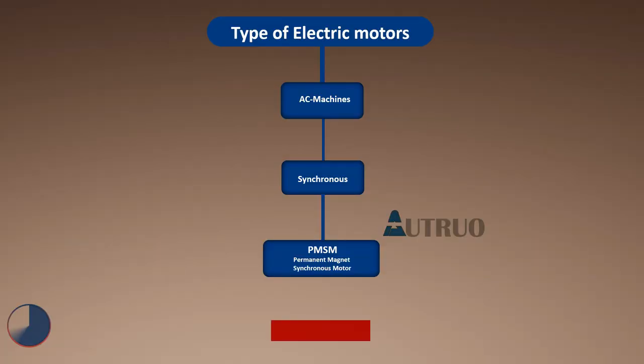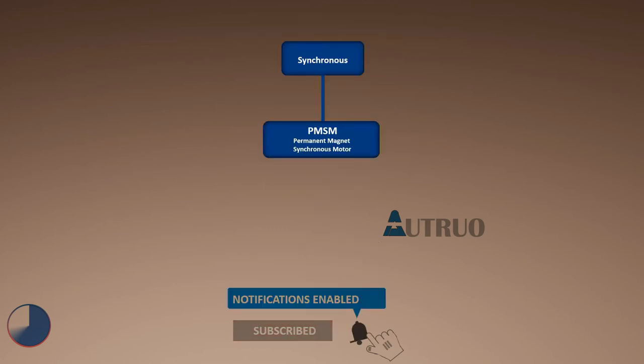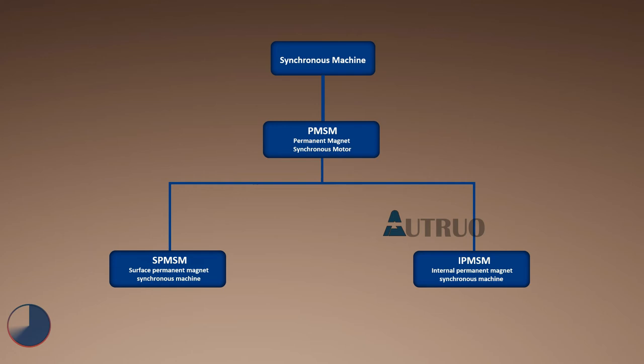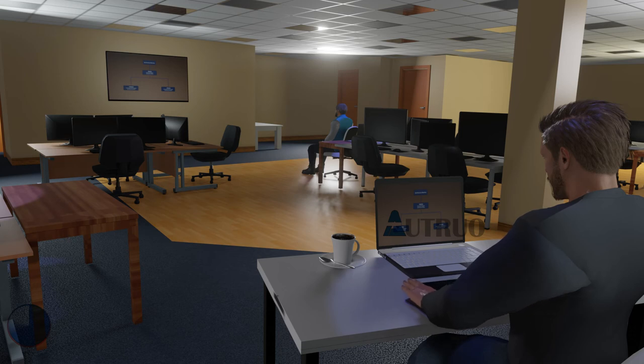On the other hand, permanent magnet synchronous motors, or PMSM as it is fondly called, are further differentiated as IPMSM and SPMSM. One thing worth noting is that the stator design of IPMSM and SPMSM are similar. However, the rotor design differs from each other. In an SPMSM, the magnets are attached to the outside of the rotor surface. And as such, the S stands for surface. So basically, the motor can now be known as a surface permanent magnet synchronous motor.